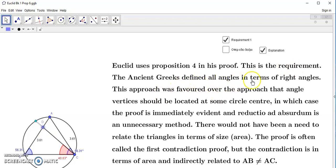So the ancient Greeks defined all angles in terms of right angles, and this approach was favored over the other approach, that angle vertices should be located at some circle center, in which case the proof is immediately evident.